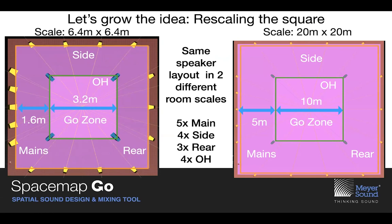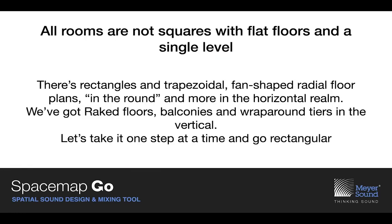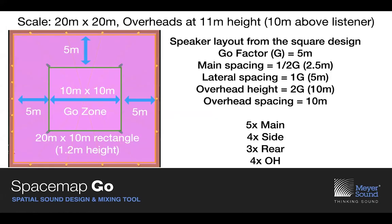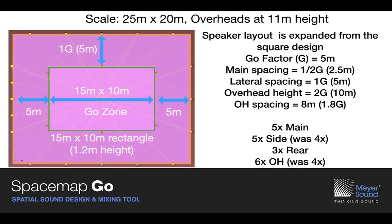Not all rooms are squares. Let's take our 20x20 square and stretch it to a 25x20 meter rectangle. We added one more lateral because the go spacing was five meters — adding five meters of room means adding five meters of laterals, which means one more speaker. If the room added only four meters, you'd still add a speaker and squeeze the spacing to about 4.7 meters. When rounding, more immersion is better than less, so round upward overall.